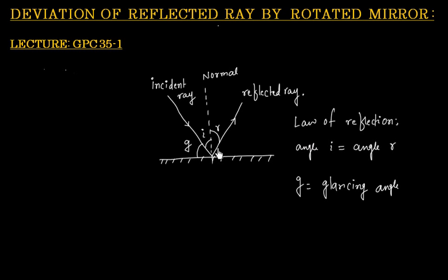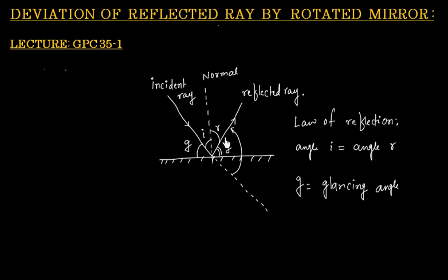So this angle is also equal to Z. Now let us extend the incident ray line. This is the extension of the incident ray. The incident ray is coming in this direction but the reflected ray is going in this direction, so the incident ray has deviated by this angle. Let us call this angle D, so D is the angle of deviation.